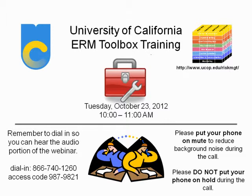A couple of housekeeping notes before we get started. If you've dialed in by phone but haven't logged in by computer and you'd like to see the slides, please point your web browser to readytalk.com. In the box where it says participant, join a meeting, enter the same access code that you used to join the call: 987-9821. We are leaving the phone lines open, so please stay aware of the level of background noise in your area. If it starts to become noisy, please put your phone on mute. To self-mute your line, you can simply hit star six; to unmute it, it's star seven. If you're called away from your phone, please do not put your phone on hold because that will cause your hold music to be transmitted to everybody else on the call. You can simply hang up, dial back in when you're available, and it will not disrupt the call.